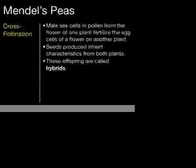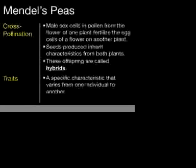Throughout this podcast and in our discussions about genetics, you're going to hear the word traits. A trait is a specific characteristic in an organism. Mendel followed seven traits in his pea plants: seed shape, color, coat color, pod shape, pod color, flower position, and plant height. We'll talk more about traits in a little bit.